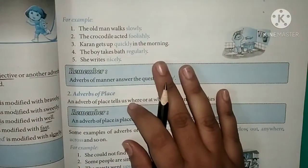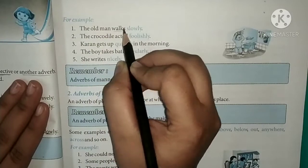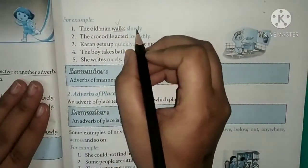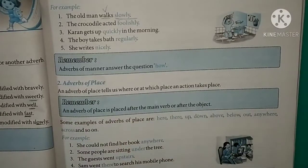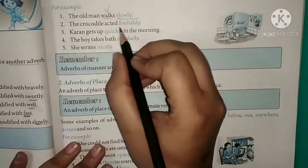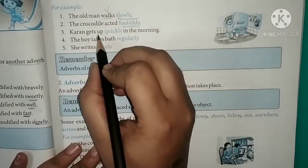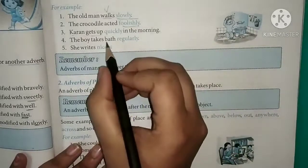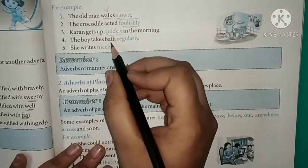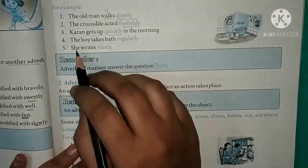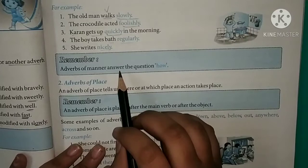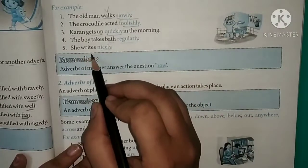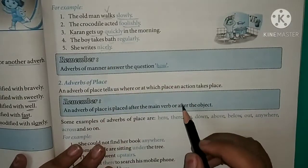Examples of adverbs of manner: 'The old man walks slowly' — the verb is 'walks', and slowly comes right after it, telling us in what manner he walks. 'The crocodile acted foolishly.' 'The student gets up quickly in the morning.' 'The boy takes bath regularly.' 'She writes nicely.' Adverb of manner answers the question 'how' — how does she write? Nicely.